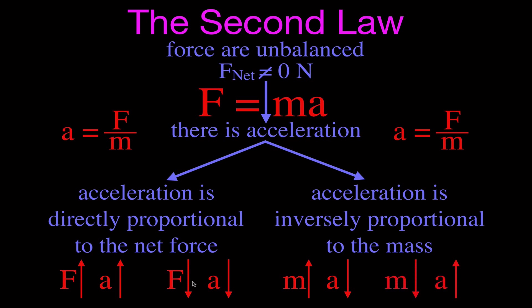You can see here the arrows point in the same direction — one goes up, the other goes up — that's directly proportional. Inversely, if one goes up and the other goes down, or one goes down and the other goes up. That is Newton's second law.